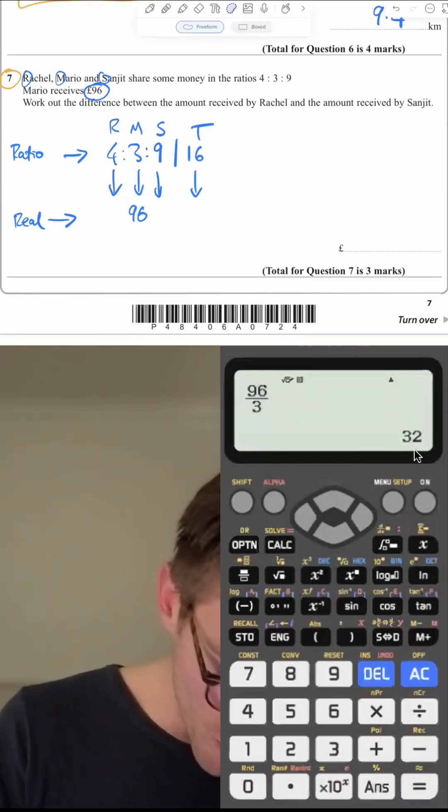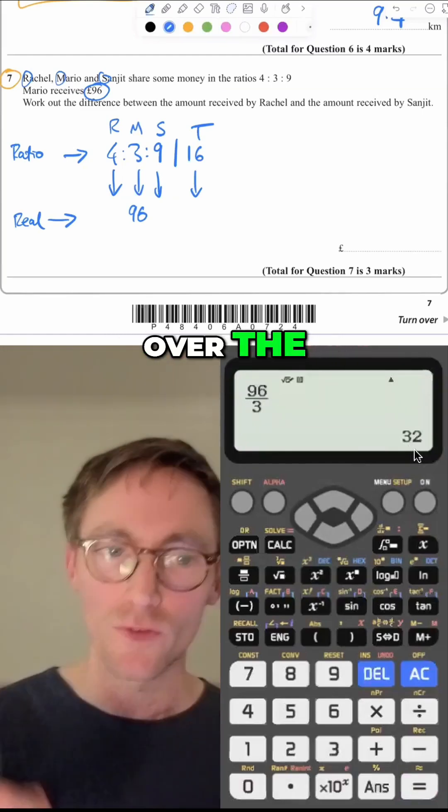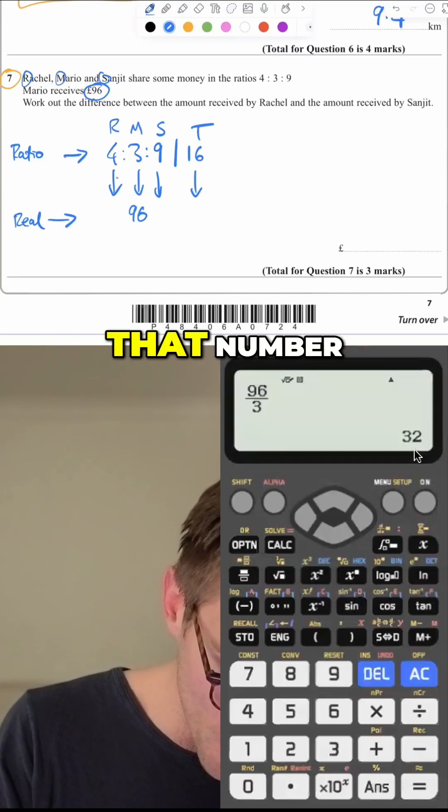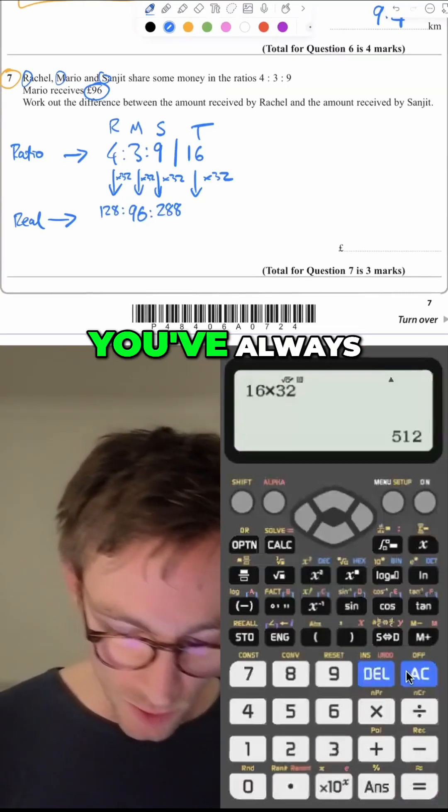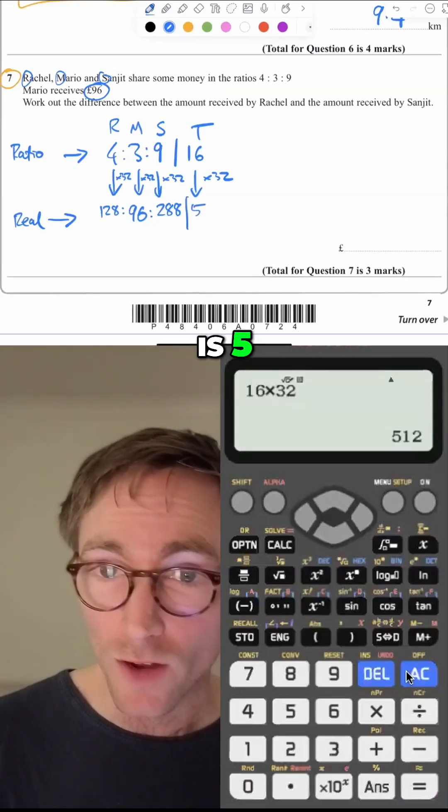So you times them all. When you do the second one over the first one thing, it's always times, you always times by that number. So we're just going to times these by 32. And even if now you got stuck, you've always got, so the total there is 512.